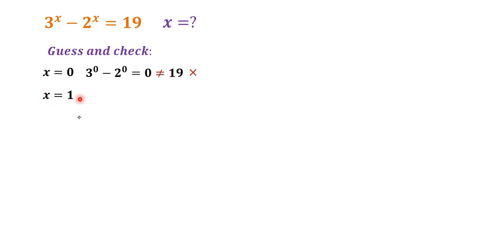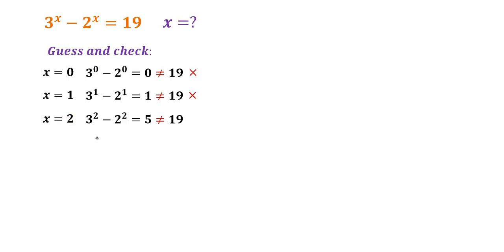Then we try x is equal to 1: we have 3 to the power of 1 minus 2 to the power of 1 is equal to 1, and it's not equal to 19, so again it doesn't work. Then we try x is equal to 2: we have 3 squared minus 2 squared is equal to 5, and it's not equal to 19, so again it doesn't work.